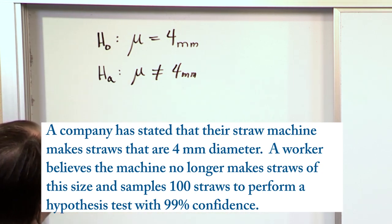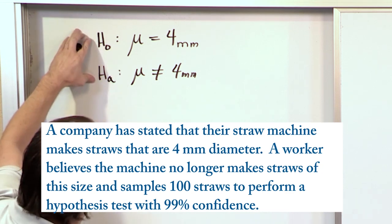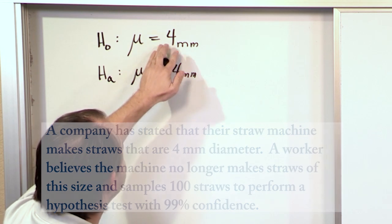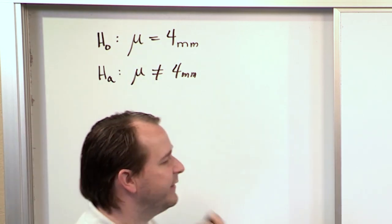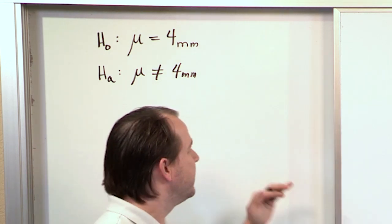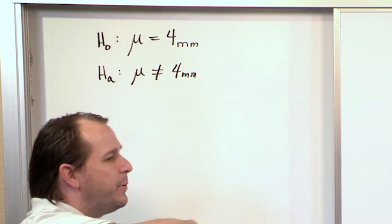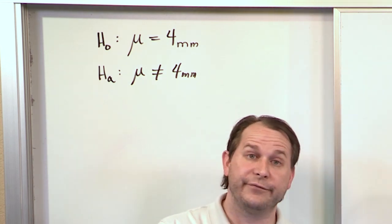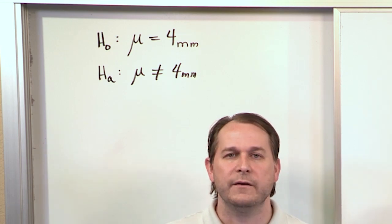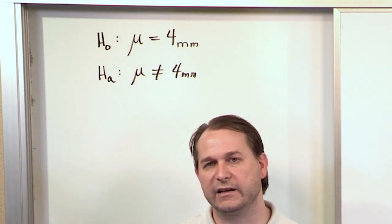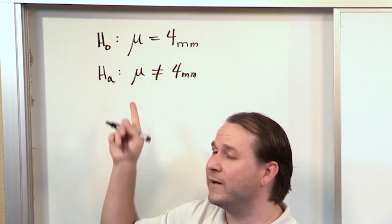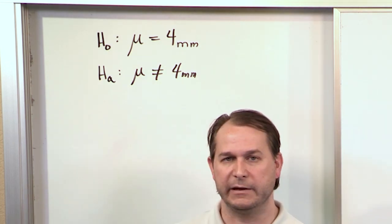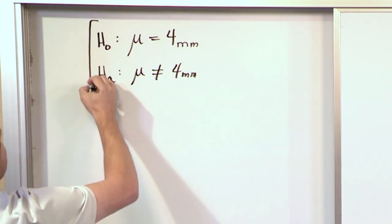On a test or quiz, when asked to write the null and alternate hypothesis, the null is the default belief — innocent until proven guilty — that the machine makes straws with a 4 mm diameter. The new guy challenges it, saying it isn't producing straws of that size. Notice these are mathematical opposites: either the mean equals 4 or it doesn't. Together, the null and alternate encompass every possible scenario. We don't have greater than or less than here because the problem doesn't say that — just 4 millimeters or not 4 millimeters. Read everything carefully.